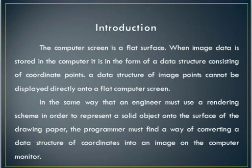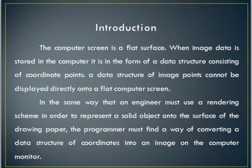Let's start with the introduction. In this part I'm going to explain how images are used and how they are represented in the rendering scheme. We are storing the image in the computer in the form of a data structure that consists of coordinate points — that means x and y points. In this rendering scheme, it represents a way of converting a data structure of coordinate points into an image on the computer monitor.